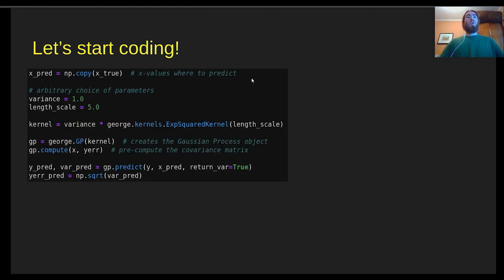Here, we just need a few lines of code to have a Gaussian process prediction. First, we need the X spread, which is the X values where we want the prediction to be. Then we have the variance and length scale, which I chose some arbitrary values. And we define our kernel with the variance and the length scale, which is given to this kernel function inside George. Then we create our Gaussian process object, fit the kernel into this object, and pre-compute the covariance matrix given the X values and the uncertainties in the observations.